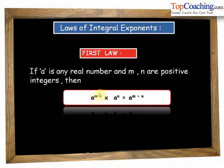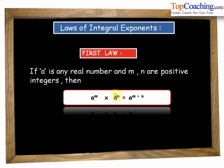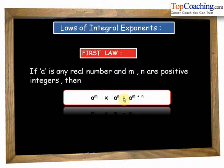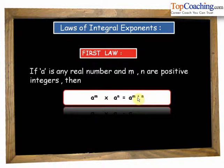If we have any two numbers a to the power of m and a to the power of n, and if they are being multiplied, then the final result is a to the power of m plus n.